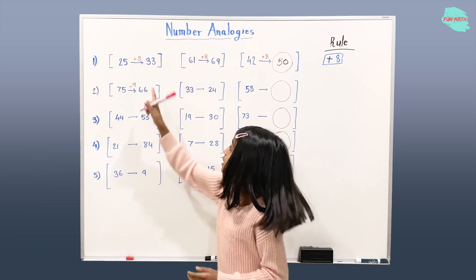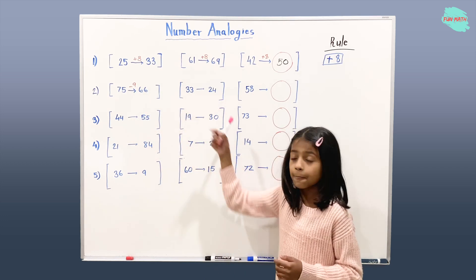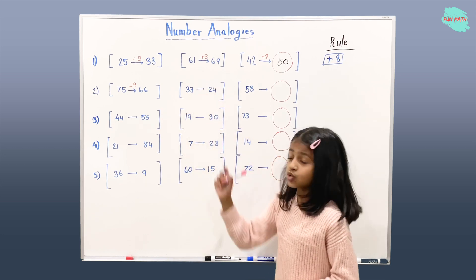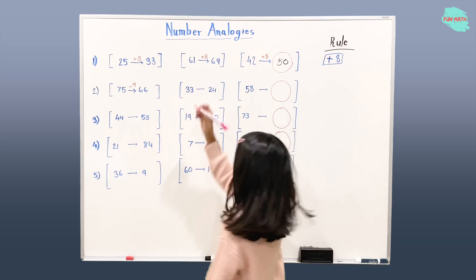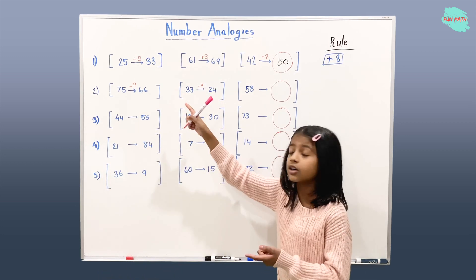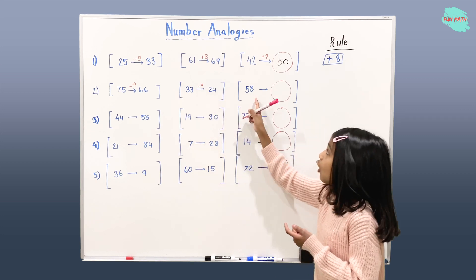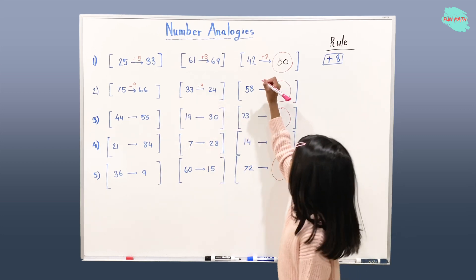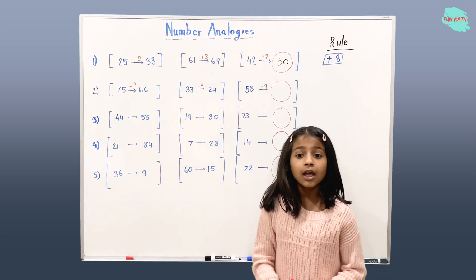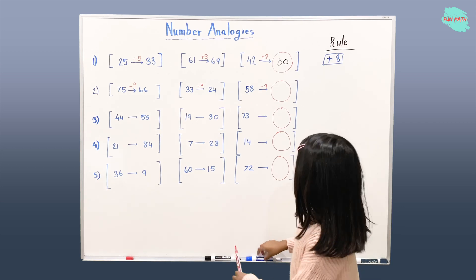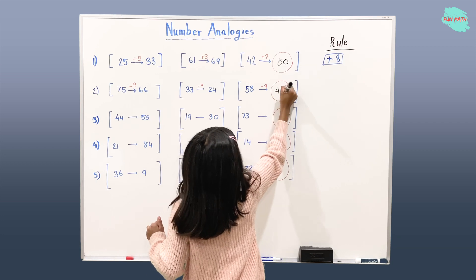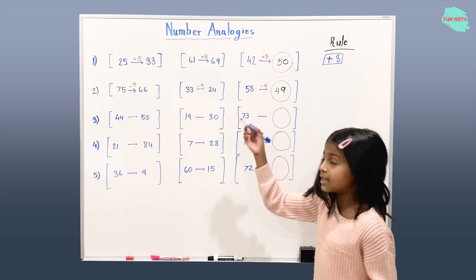So we will apply this minus 9 rule in this group and see if it works. 33 minus 9 gives us 24 — that's correct. So that means this rule is correct. So if this rule is correct, we are going to apply minus 9 over here in the third group. So what's 58 minus 9? It is 49. Our rule was minus 9.